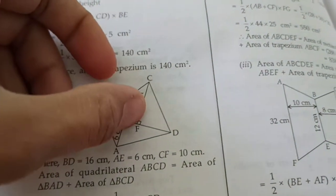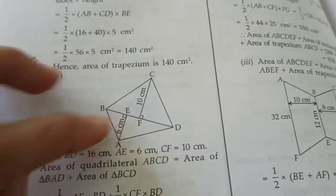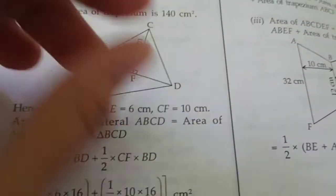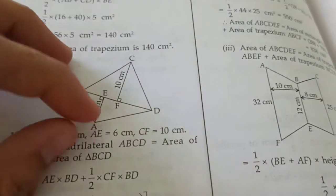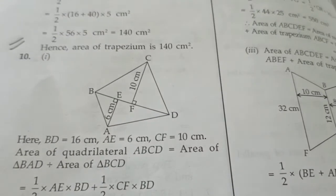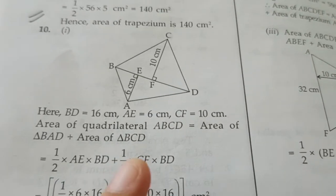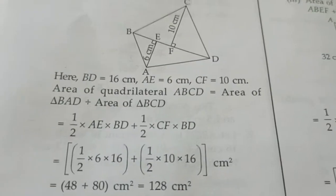Triangle ka ek altitude di hai. Now, this also looks like a triangle. Triangle ka ek altitude di hai, thik hai? So, area of quadrilateral will be area of triangle this plus area of triangle this, which is equals to, now we know the formula of area of triangle. That is, half multiplied by AE multiplied by BD plus half multiplied by CF multiplied by BD.